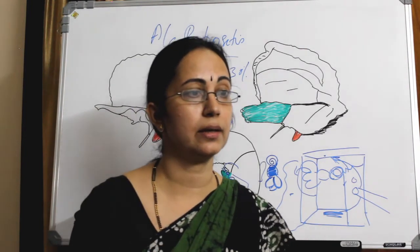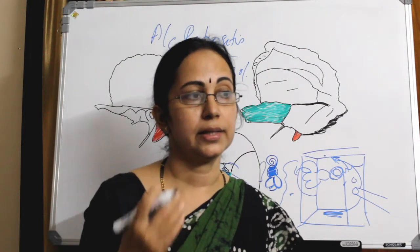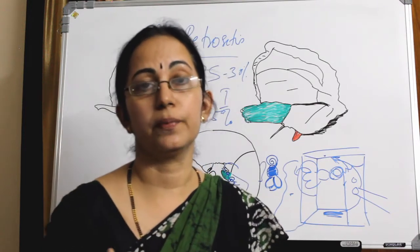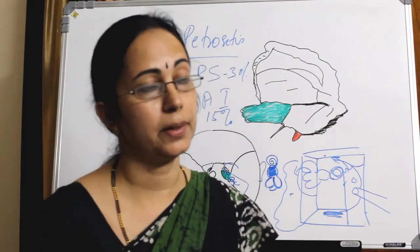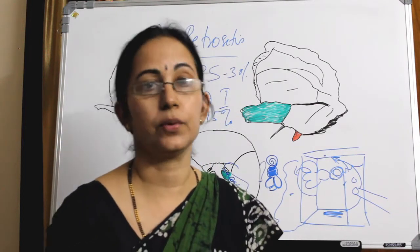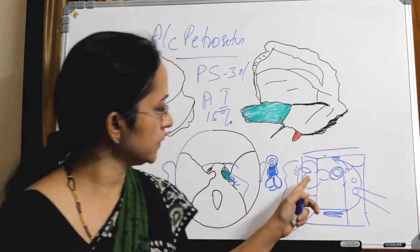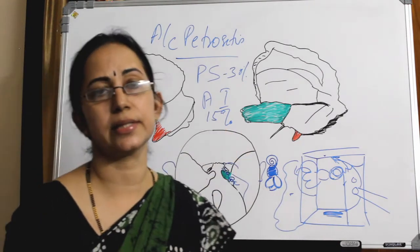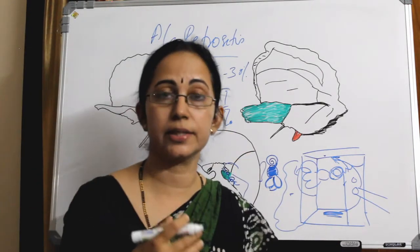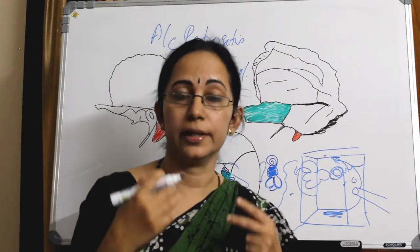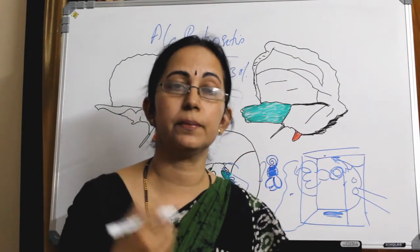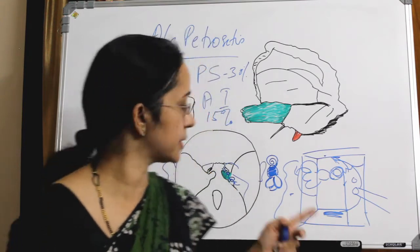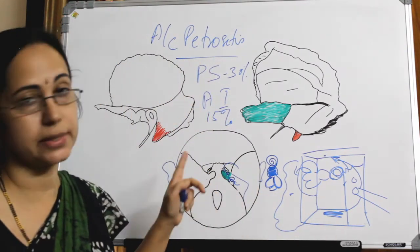What is Trautmann's triangle? That is discussed in the anatomy of the mastoid antrum and air cells. So those are the two air cell tracts — that is how the infection from the mastoid and middle ear goes and reaches the petrous apex.